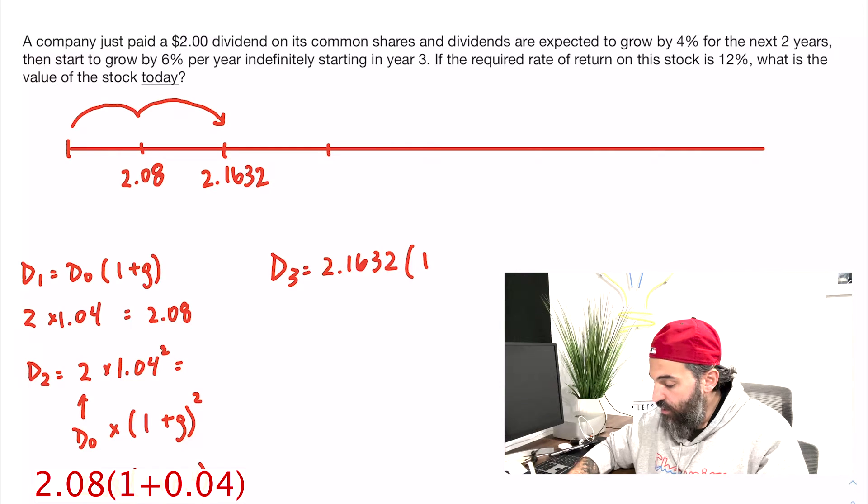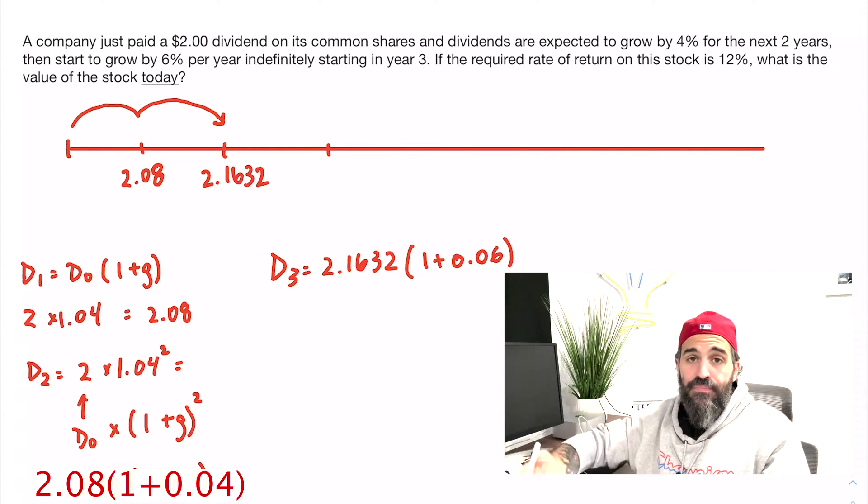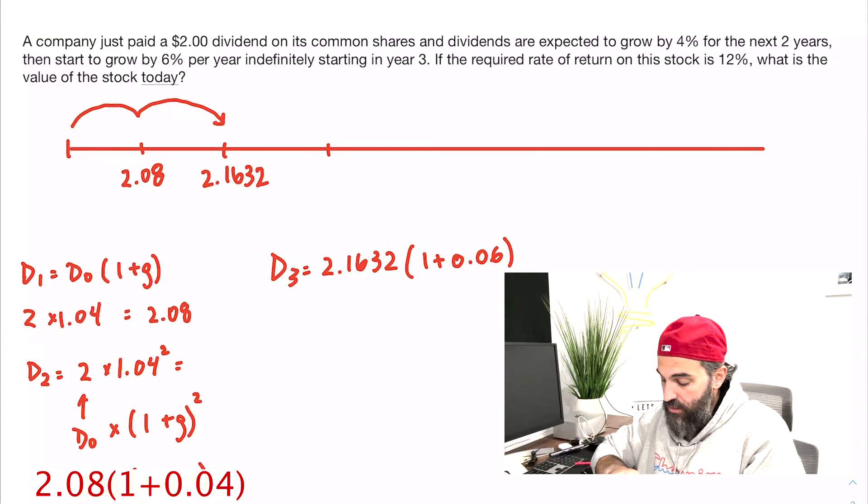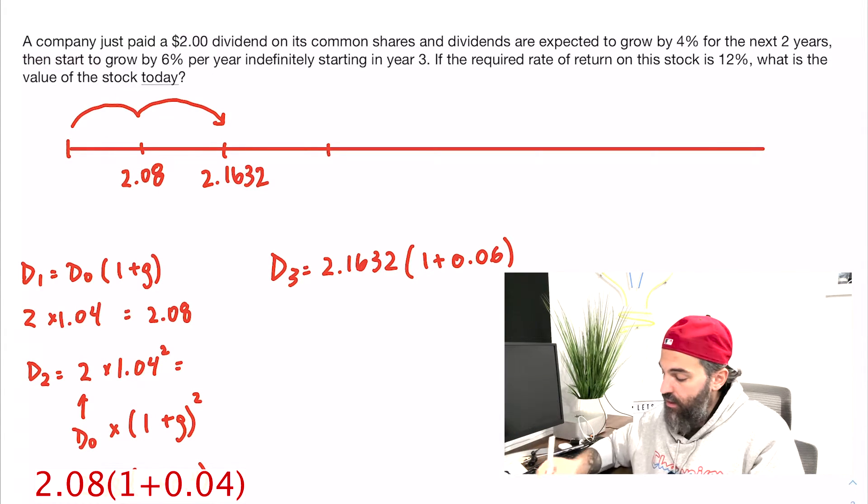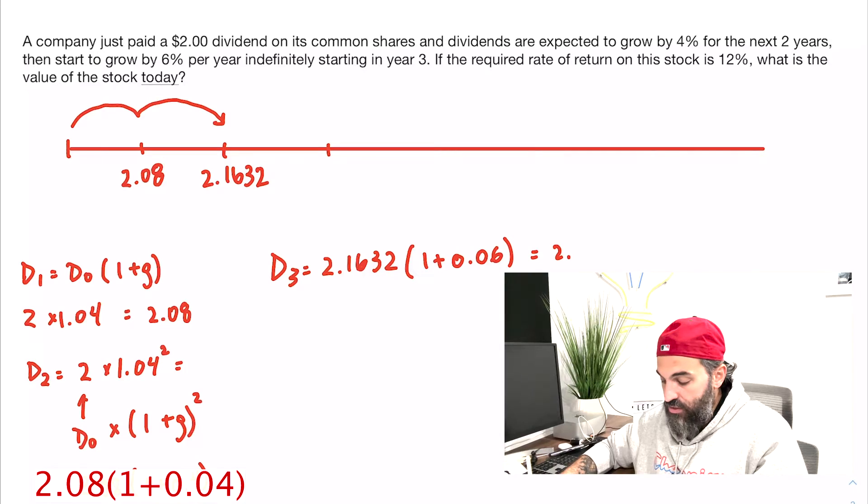Again, I'm using the same formula, I'm just adding my growth rate. So times 1.06, and that is 2.293.